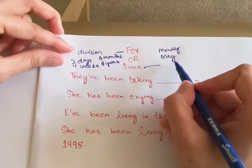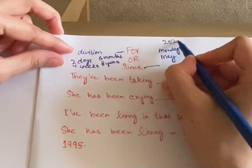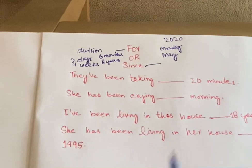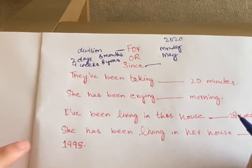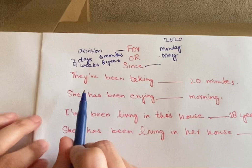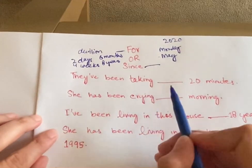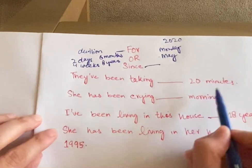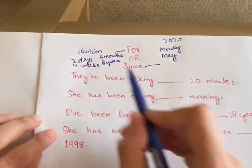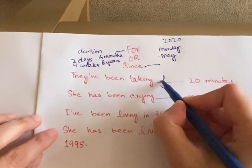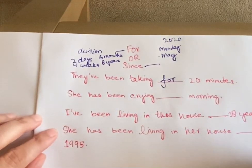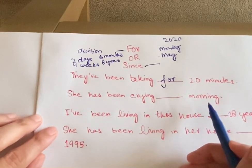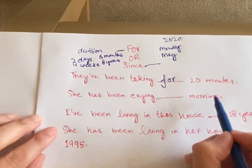We say the name of the year, like 2020. Now let's look at some examples. 'They have been talking for 20 minutes.' Here, 20 minutes is a duration of time, so we use 'for': they have been talking for 20 minutes.